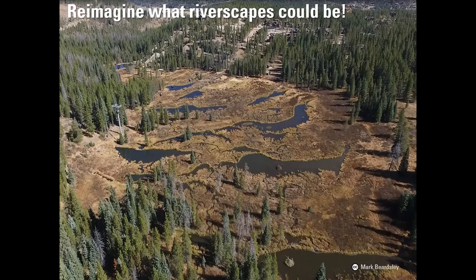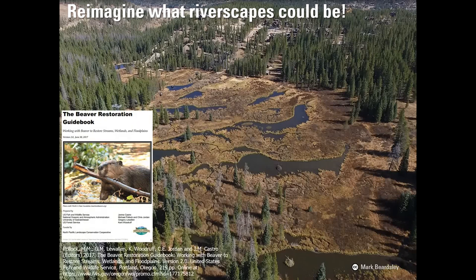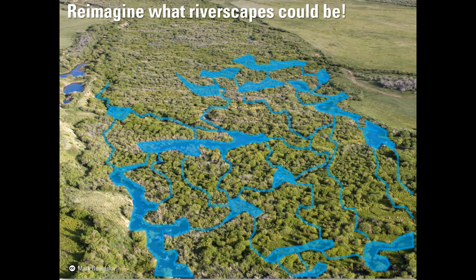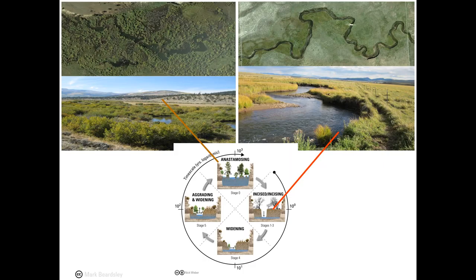This one's in Cucumber Gulch Preserve near Breckenridge, and it's a designated aquatic resource of national importance by the EPA. You can read about it as a case study in the Beaver Restoration Guidebook. The point is that riverscapes like this are totally natural and totally awesome. Like Colin said, when it comes to restoration, it's time we think beyond channels and reimagine what riverscapes could be. Restoring natural stage zero riverscapes like the one on the left yields much better aquatic habitat and many more ecosystem services than stabilizing and enhancing stage one channels like the one on the right.